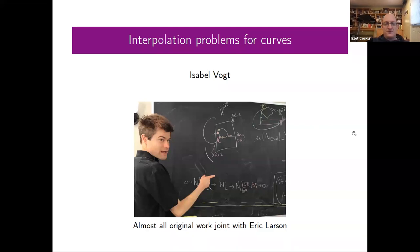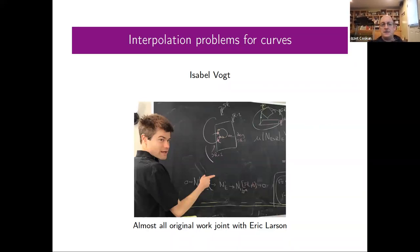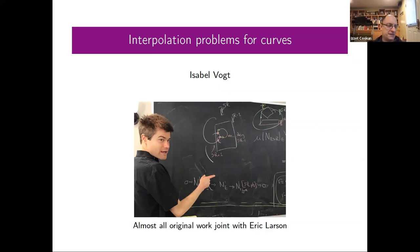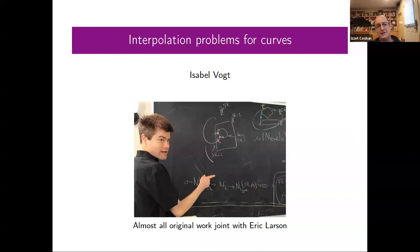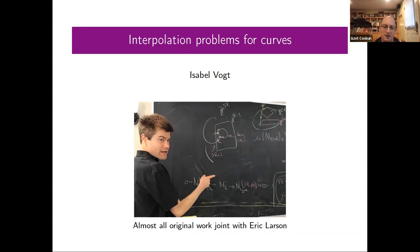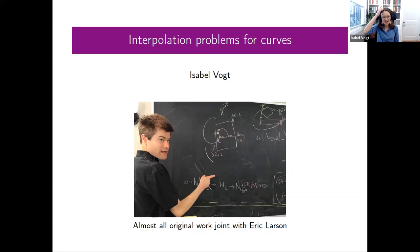Welcome everybody to the Turkish Math Society's Distinguished Colloquium Series. Today we're very pleased to have Isabel Vogt from Brown University, who will tell us about interpolation problems for curves. Isabel got her PhD in 2019 from MIT under Bjorn Poonen and Joe Harris. She was an NSF postdoc at Stanford, then a faculty member at the University of Washington before joining Brown. Her honors include a Barry Goldwater Scholarship and a Maryam Mirzakhani Fellowship. Without further ado, I'll turn it over to Isabel.